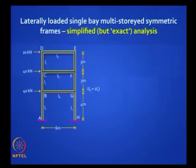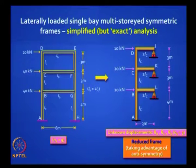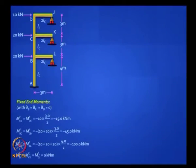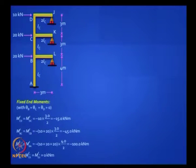Let us simplify this problem by recognizing the symmetry in the frame — by cutting it in the middle and putting roller supports wherever we cut. We just need to analyze one half, dividing the applied lateral loads by two, because one half goes to the windward half and the other to the leeward half. Now, what do we mean by fixed end moments? We are talking about a structure which is kinematically determinate, and we have identified only three rotational unknowns: theta_B, theta_C, theta_D. We are not taking the sways as unknowns.